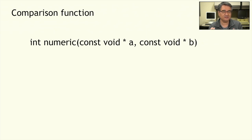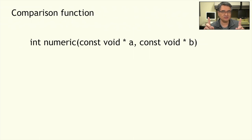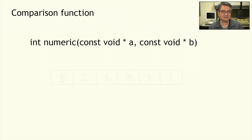By passing in void pointers, we're telling the comparison function that you're just going to receive two addresses. They're declared to be constants because we're promising to the compiler that we're not going to modify anything in the array — we're just going to look. The purpose of the comparison function is to get two elements of the array, compare them to see whether they're in the correct order or not, and then tell the quick sort function whether they need to be swapped or left as is.